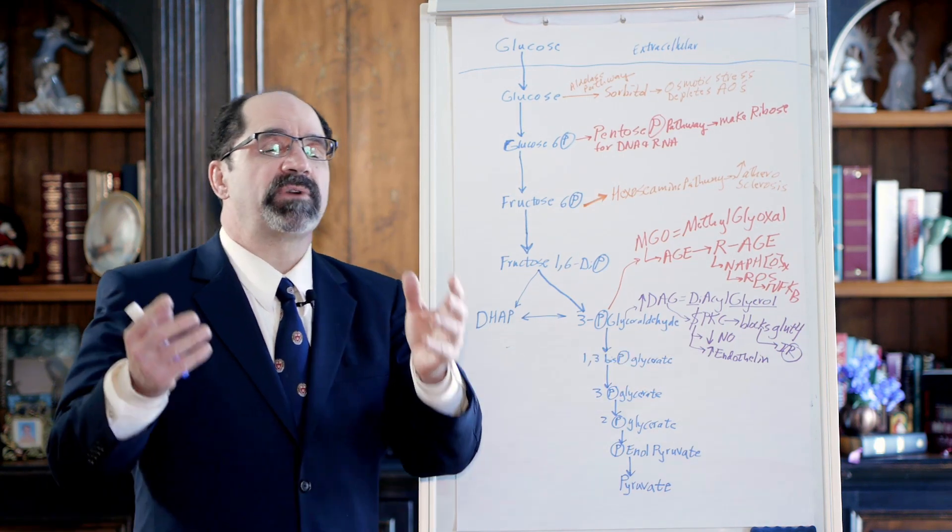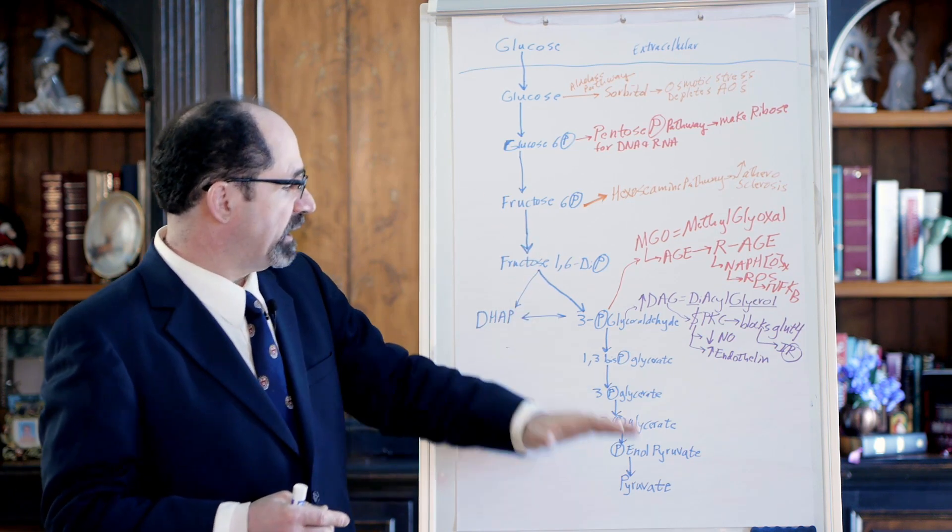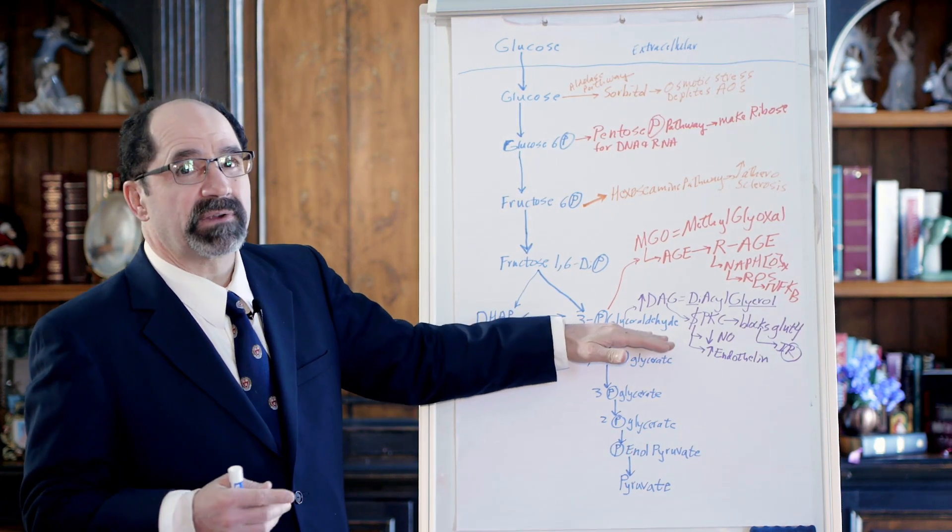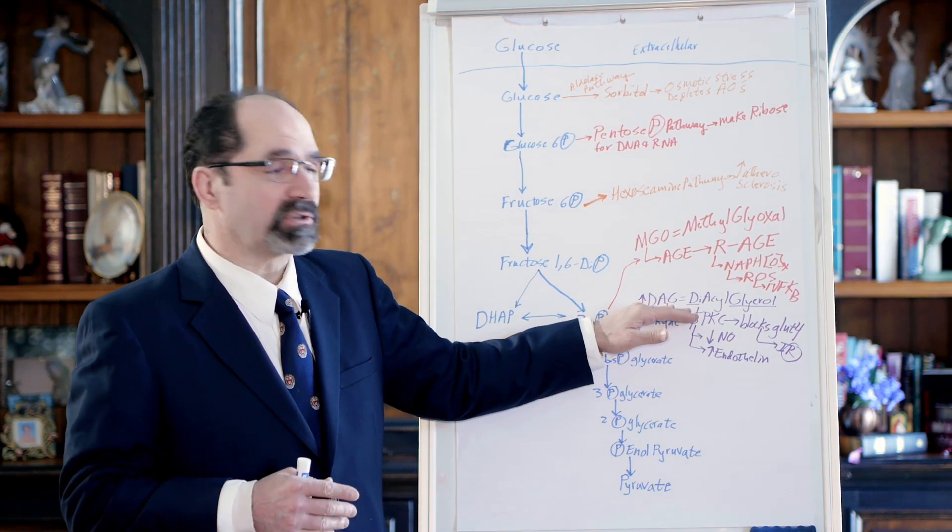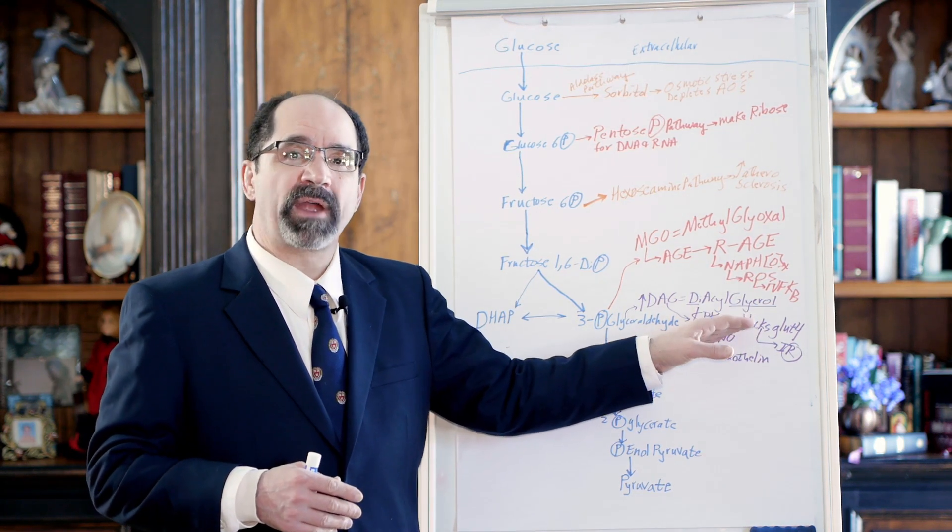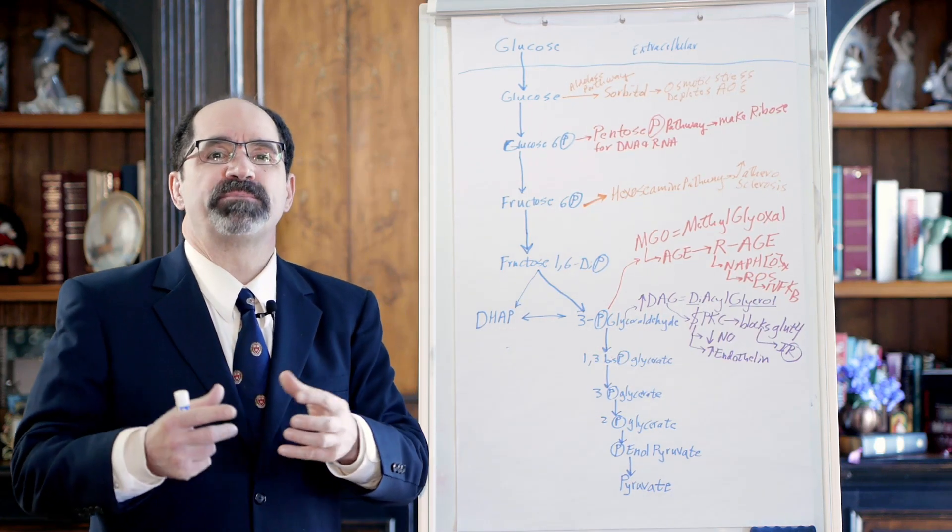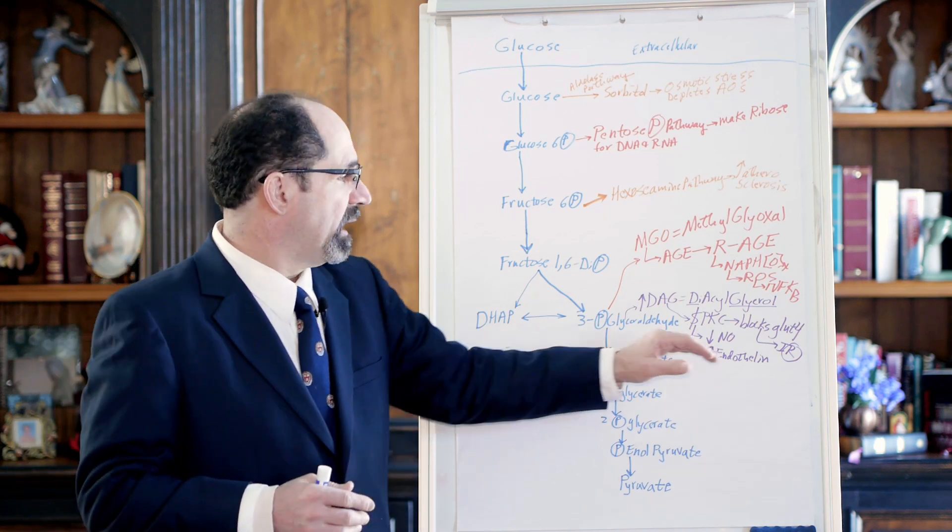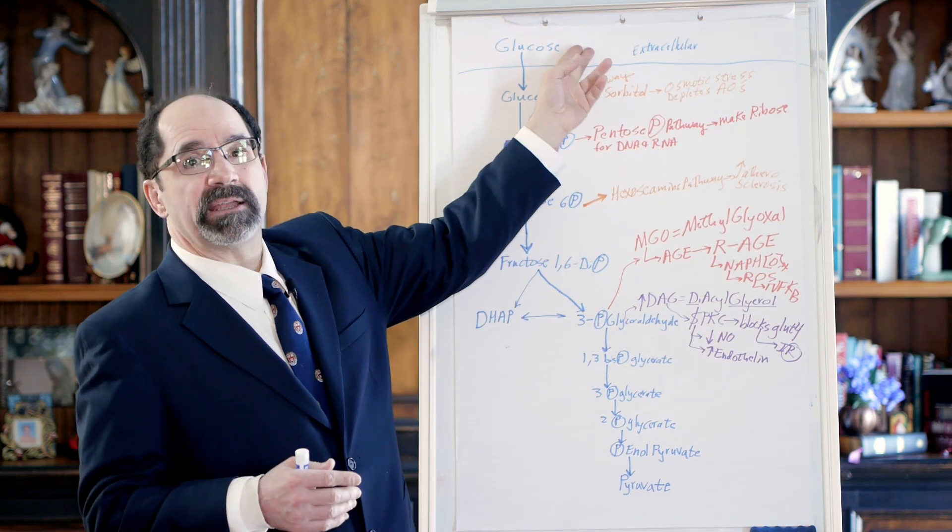Protein kinase C will subsequently block the passage of the glucose type 4 transporters up to the plasma cell membrane and that will be the main cause right there of insulin resistance. So this is what insulin resistance is all about: saturated fat or saturated fat from fructose originally causing reverse of electron transport leading to a backup of Krebs cycle and glycolysis, and then most importantly three-phosphoglyceraldehyde accumulating.